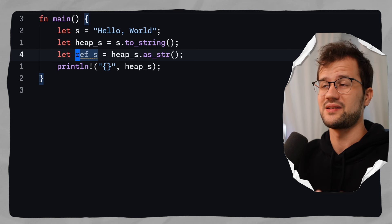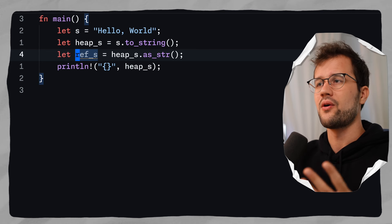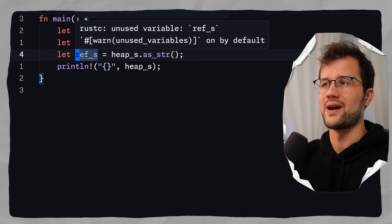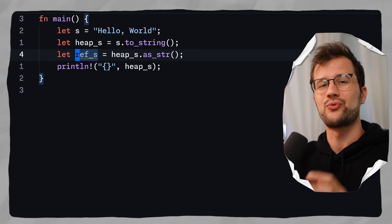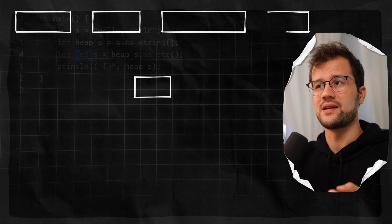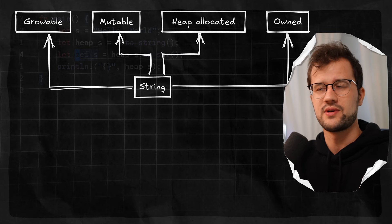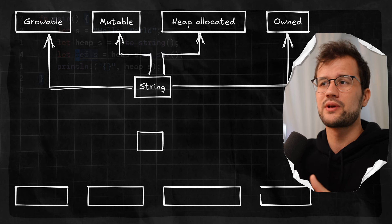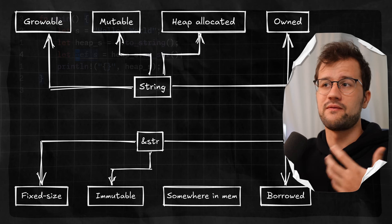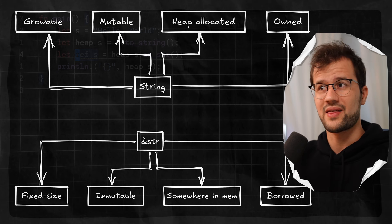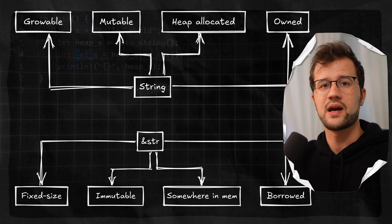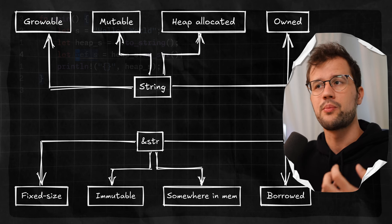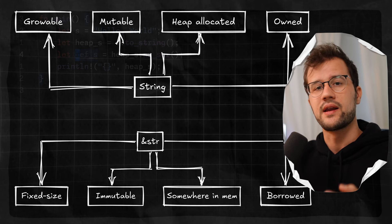To leverage the functionality of heap-allocated strings but also the performance of reference strings — ref_s is now a reference string again. There are performance differences: the heap-allocated String is allocated on the heap, but the reference string is not necessarily on the heap; it's allocated somewhere in memory. The reference string is generally more performant but less flexible, because the pointer to the data and the length are always on the stack. This means copying a reference string is much more performant since you don't need to access the heap.